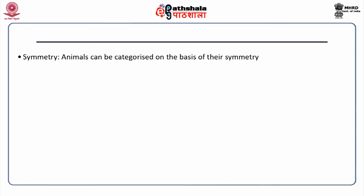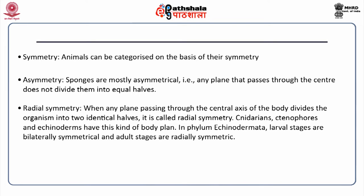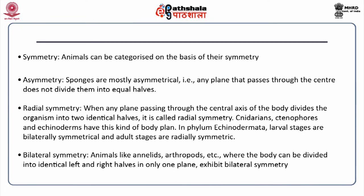Based on symmetry, animals can be categorized as follows. Sponges are mostly asymmetrical — any plane passing through the center does not divide them into equal halves. Radial symmetry is when any plane passing through the central axis divides the organism into two identical halves; cnidarians, ctenophores and echinoderms have this body plan. In phylum echinodermata, larval stages are bilaterally symmetrical and adult stages are radially symmetric. Animals like annelids and arthropods, where the body can be divided into identical left and right halves in only one plane, exhibit bilateral symmetry.